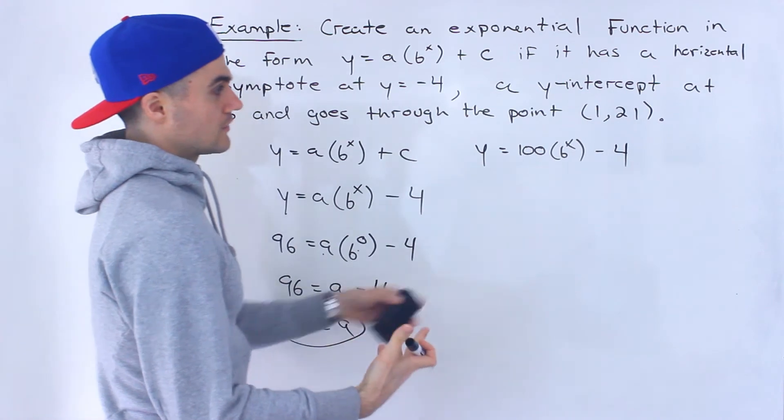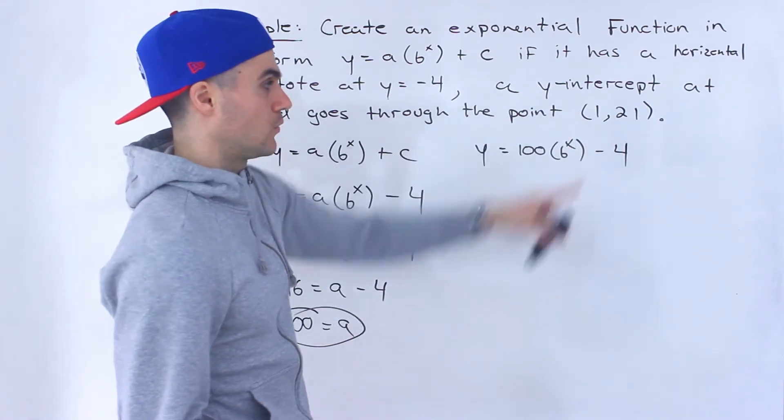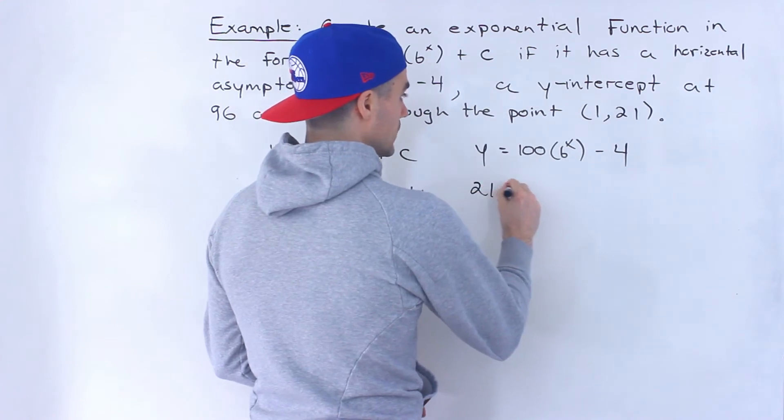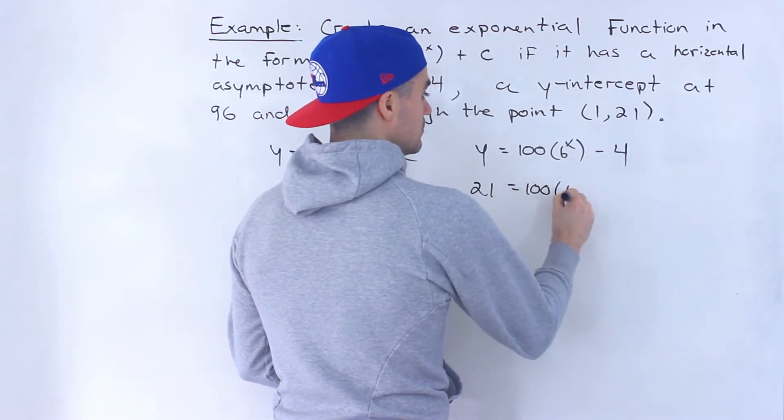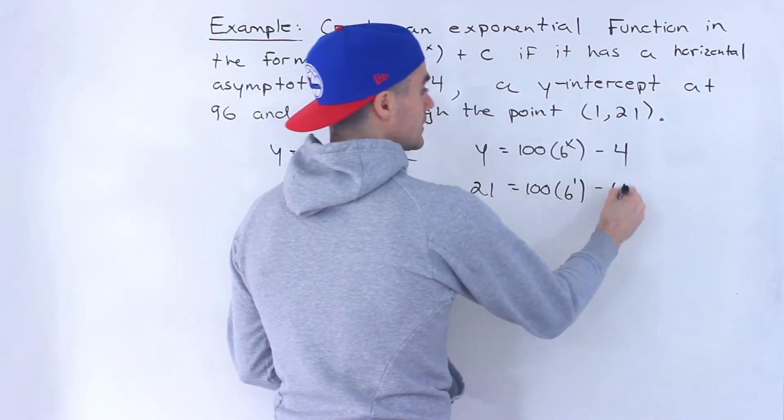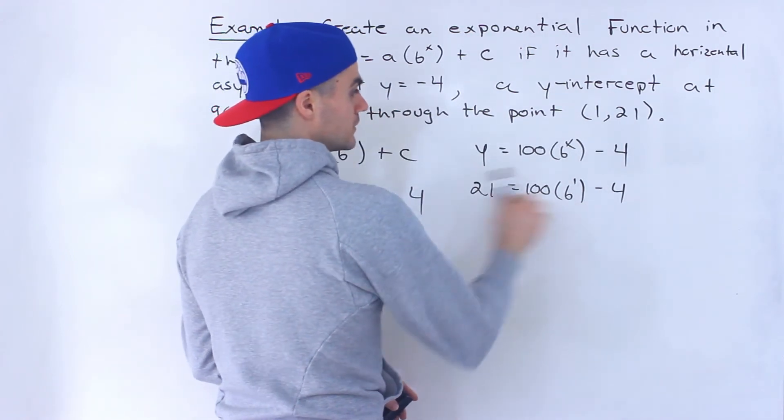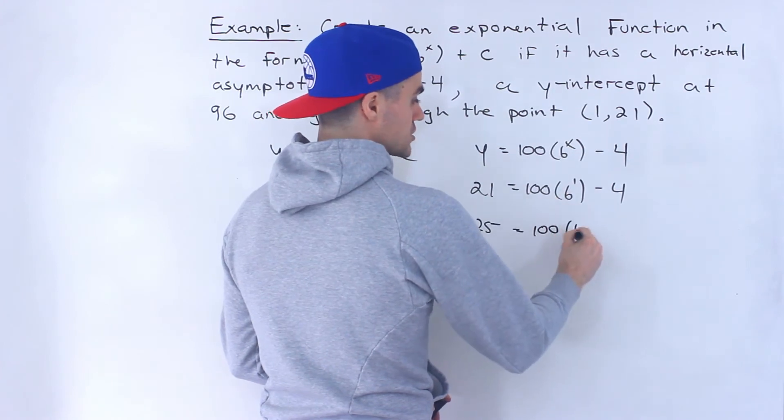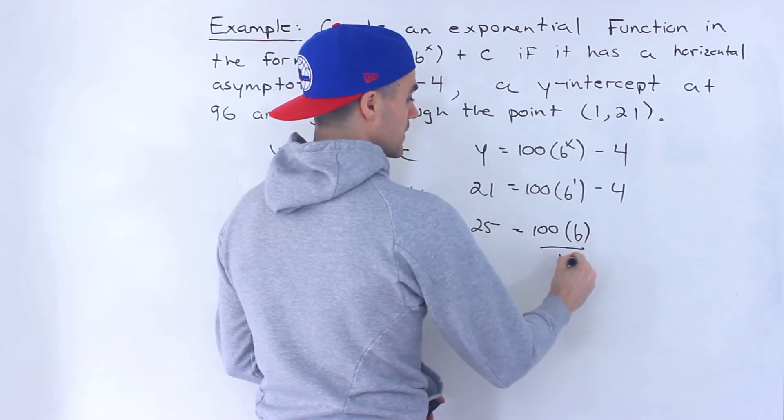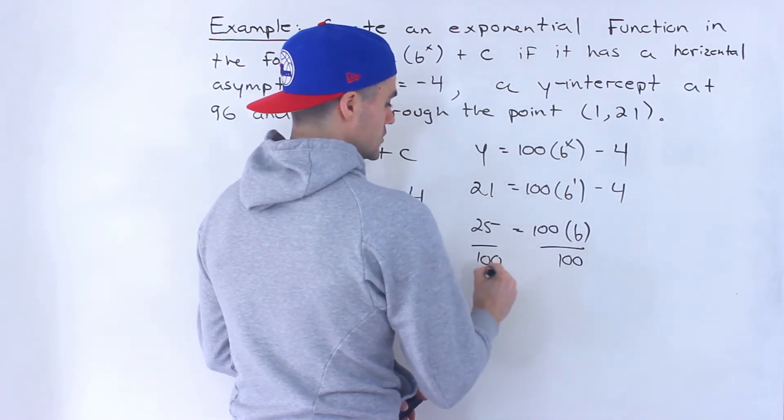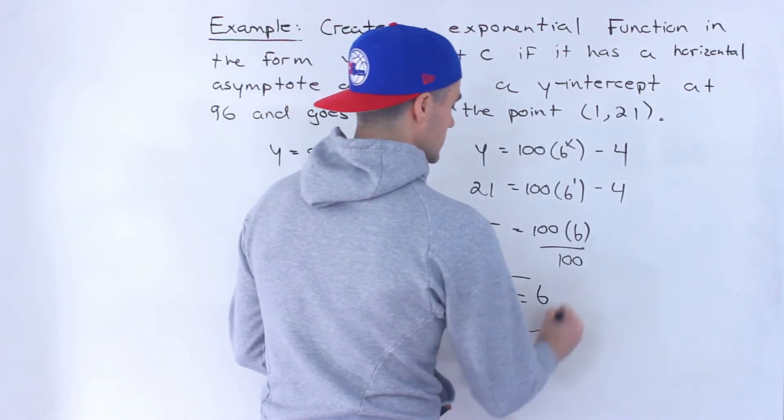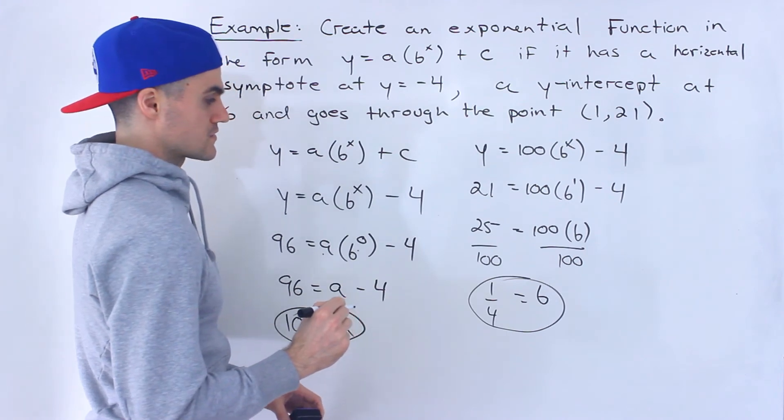And now, to get the b value, we could plug in that point (1, 21) for x and y. So we'll have 21 equals 100b to the power of 1 minus 4. Bring the negative 4 over, we'll have 25 here. 100b to the power of 1 is just b. Divide both sides by 100. 25 over 100 is 1 over 4. So that's the basis for this function.